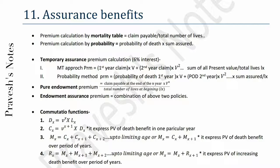Rx equals Mx + M(x+1) + M(x+2) up to limiting age, or Rx equals Mx + R(x+1). Rx expresses the present value of increasing death benefit over a period of years.